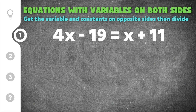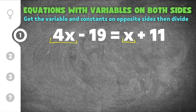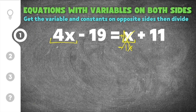We're going to add or subtract first to get all the variables together, and then add or subtract again to get all the constants together. If I look at this equation, we have 4x and we have just x, which is also 1x. I need to put those together. This is a positive 4x and this is a positive 1x. I have to move one of these x's to the other side so it's with its like term. I'm just going to subtract 1x from this side — these x's will cancel. I subtracted 1x on this side, and whatever you do to one side, you have to do to the other. So on this side, I'm also going to subtract 1x. So we're going to do 4x minus 1x, which is 3x.